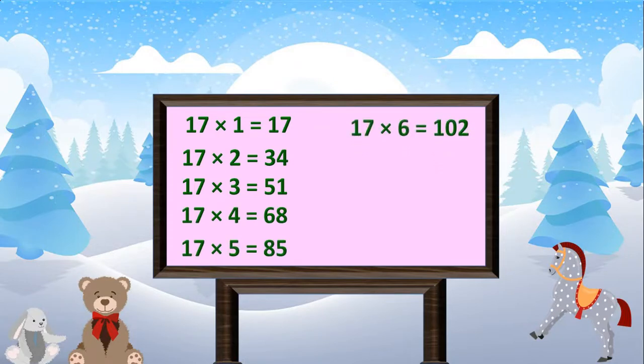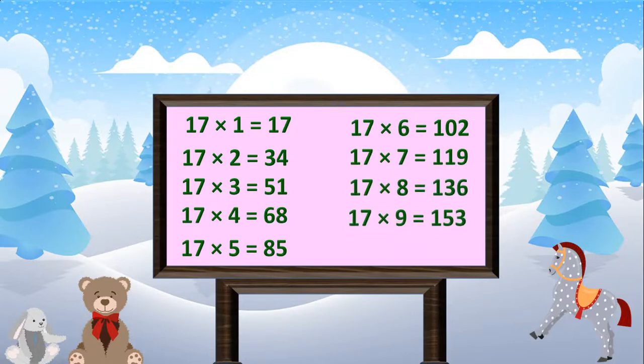17 6s are 102, 17 7s are 119, 17 8s are 136, 17 9s are 153, 17 10s are 170.